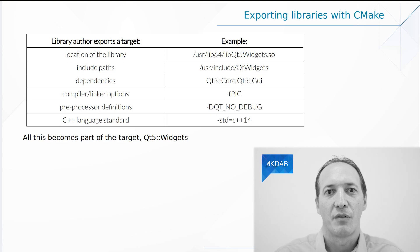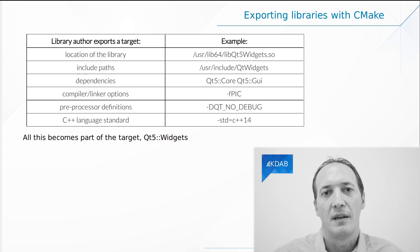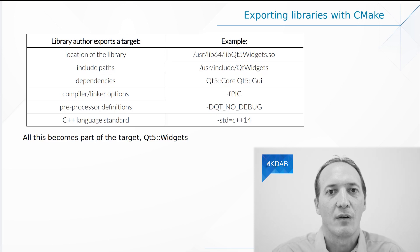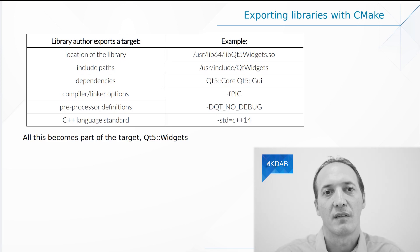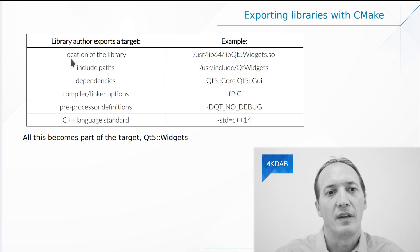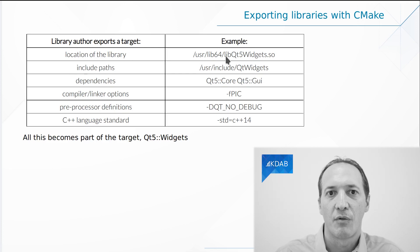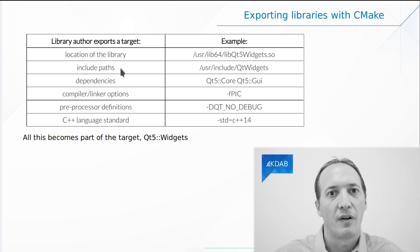What happens when we export a library with CMake is that the library author is going to save a number of information inside of the target, which is the thing that would be used by other projects to use that library. And this mechanism works inside of the same project or between different projects just the same way. What happens is the author of the library will, in the target, encode the location of the library — for instance, it's the .so at that path.